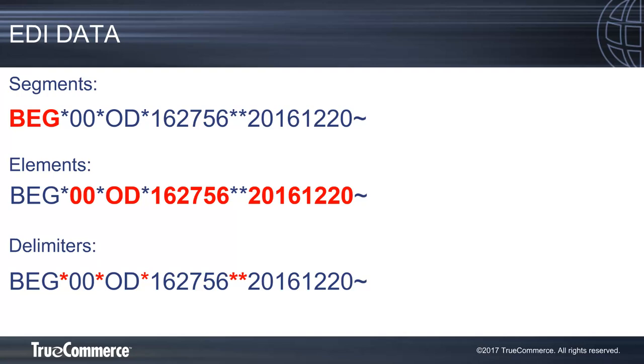As a reminder, EDI data is made up of segments and elements. The segments and elements are separated by delimiters.